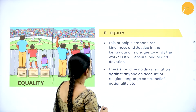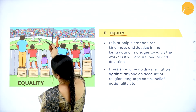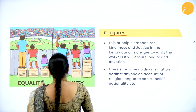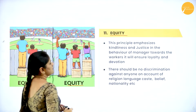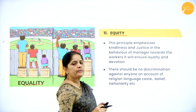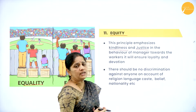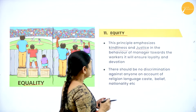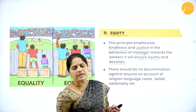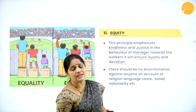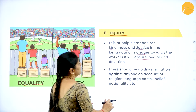The next principle is equity. Equity means ensuring that all employees are treated fairly — not just equality, but ensuring everyone receives what they need. Equity emphasizes kindliness and justice in the treatment of all persons working in the organization. When managers treat everybody with kindness and justice, they earn the employees' respect, loyalty, and devotion. There should be no discrimination against anyone.